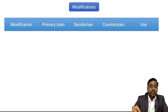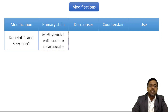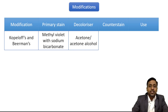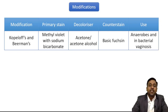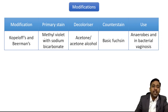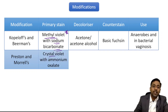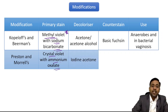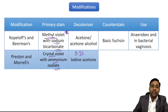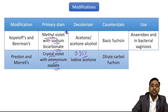There are certain modifications of gram stain. First is the Kopeloff and Biermann modification: primary stain is methyl violet with sodium bicarbonate to strengthen binding, decolorizer is acetone-alcohol, and counter stain is basic fuchsin rather than safranin. It is used mainly for anaerobes and staining smears for bacterial vaginosis — the key thing to remember is methyl violet with sodium bicarbonate. Second is the Preston and Morel modification: crystal violet with ammonium oxalate as strengthening agent, decolorizer is iodine-acetone (0.35% iodine), and counter stain is dilute carbol fuchsin — used for stronger gram-positive staining.